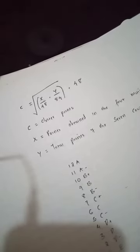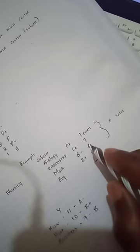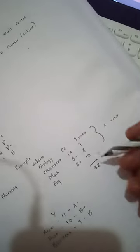First we'll get the x value. X value is the points obtained in the four main courses. The main courses, let's say we want to do nursing, so nursing will be required to have Biology, Chemistry, Maths, and English. Biology C plus, 7 points; Chemistry C plus, 7 points; Maths B minus, 8 points; English B plus, 10 points. You get the sum, it's 32. So 32 is the x value.